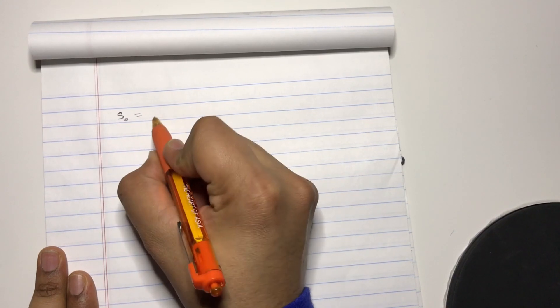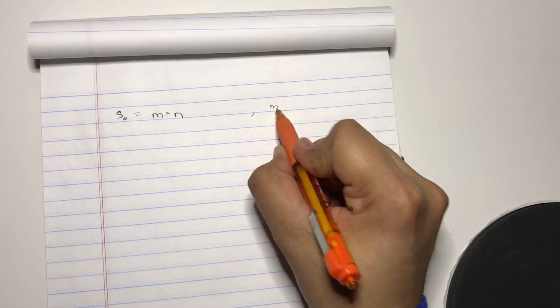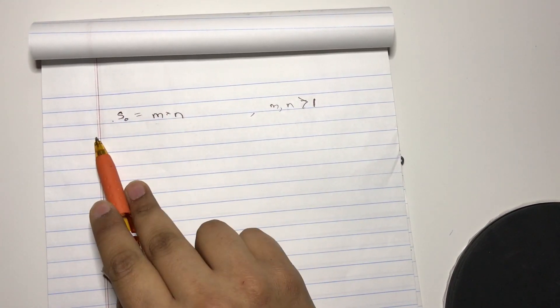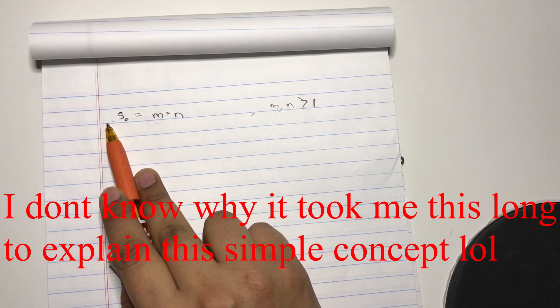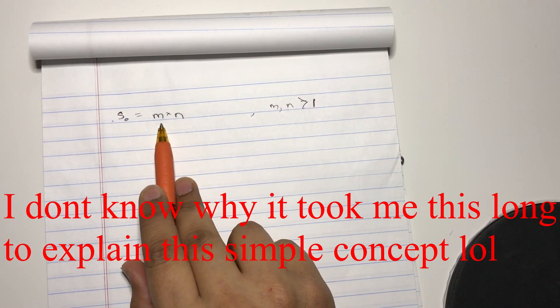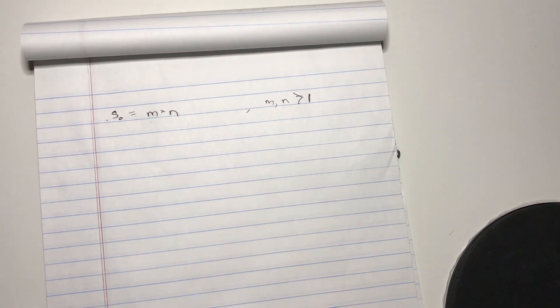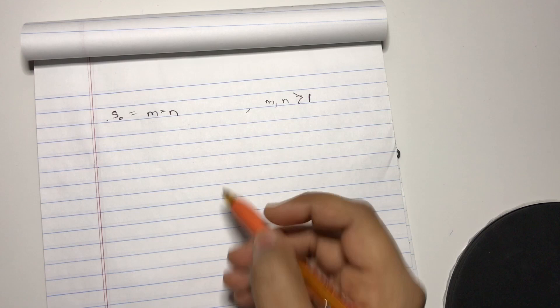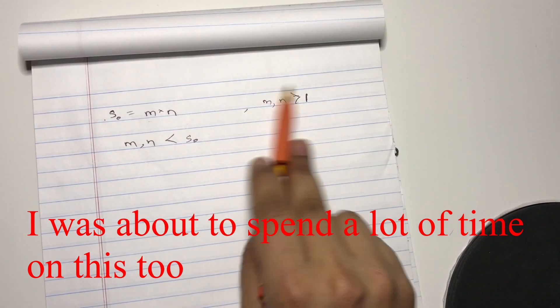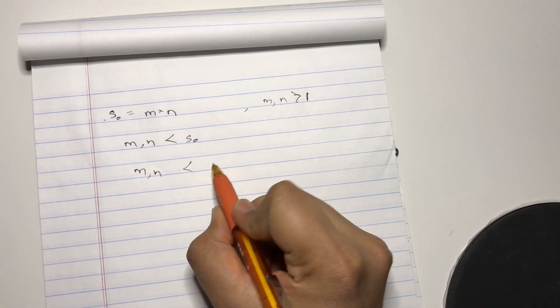So S_0 is the product of at least two numbers, M and N. M and N are greater than one because S_0 is a natural number, and this is how the factorization of any number takes place. M and N could be different, could be the same actually, but M times N, this is how it's represented. So M and N are less than S_0 because they can't be more, since the product equals S_0 and they're both greater than one. So M and N have to be less than S_0.